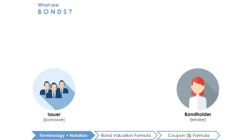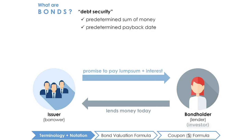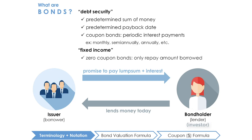First of all, what even is a bond? Bonds are a type of debt security where the issuer owes the bond holder a predetermined sum of money at a predetermined date in the future, and for the most part, in between must periodically pay the bond holder interest. These are known as coupon bonds, and the interest is paid at fixed intervals of time such as monthly, semi-annually, or annually. The interest paid each period is also predetermined, which is why bonds are often referred to as fixed income securities.